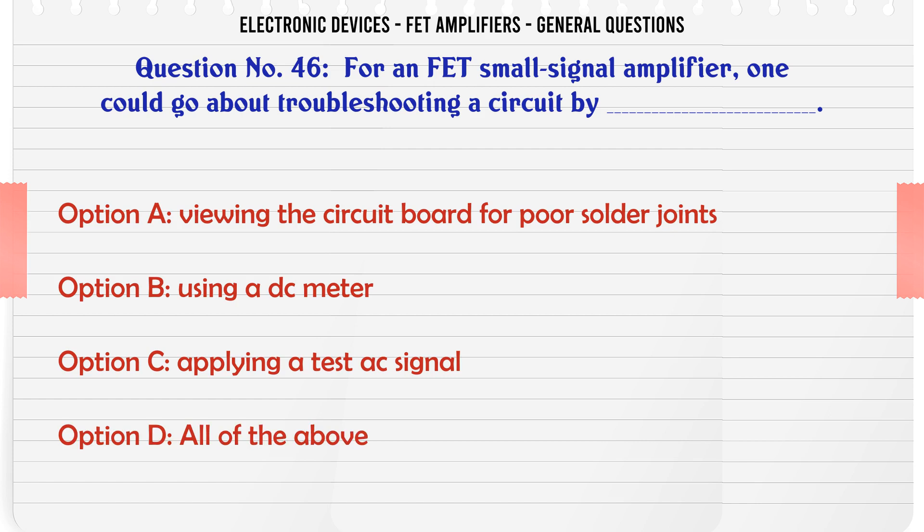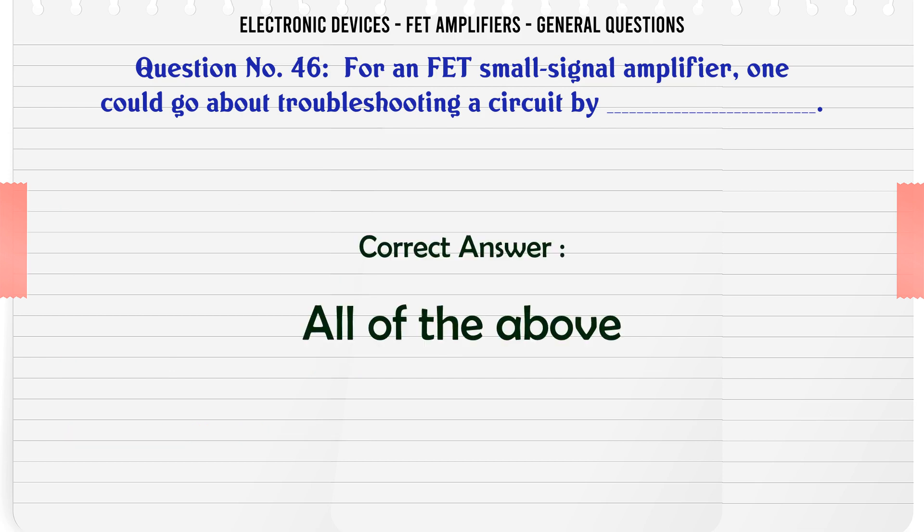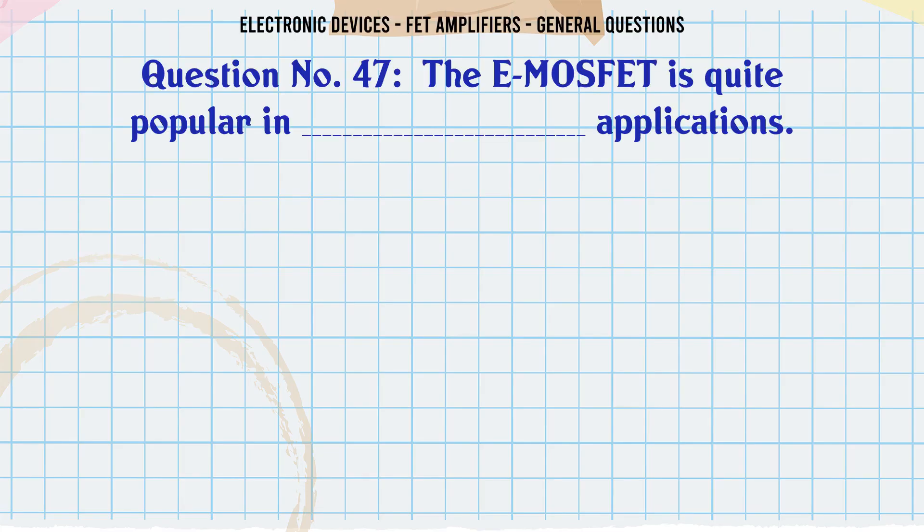For an FET small signal amplifier, one could go about troubleshooting a circuit by: A. Viewing the circuit board for poor solder joints. B. Using a DC meter. C. Applying a test AC signal. D. All of the above. The correct answer is all of the above.